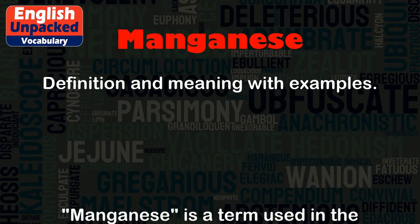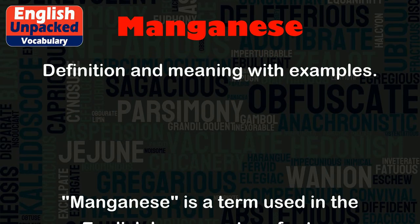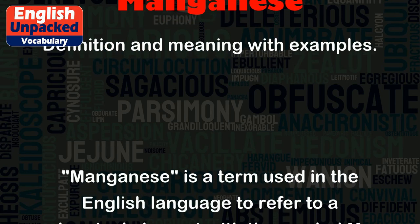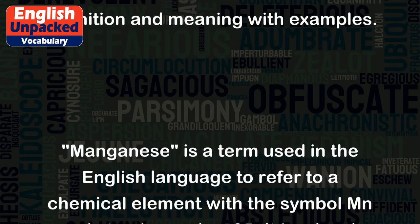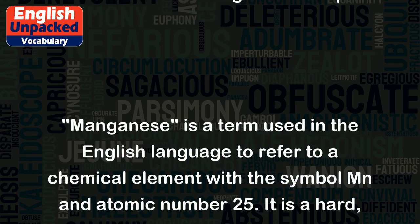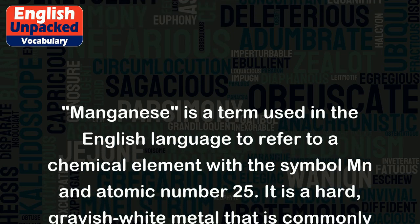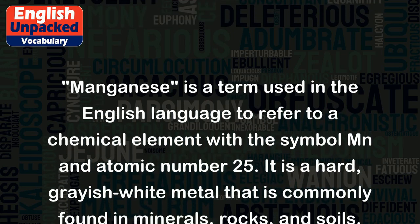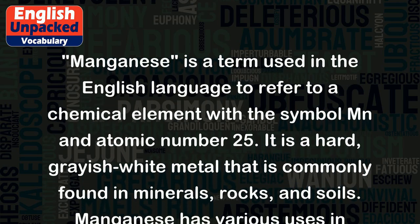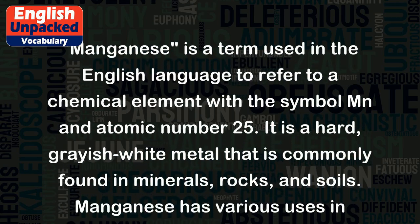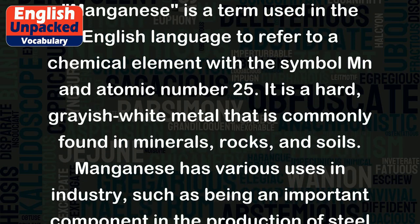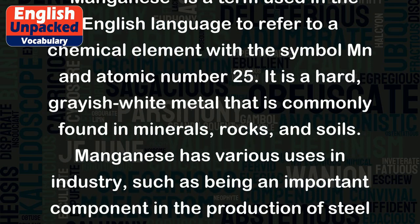Manganese is a term used in the English language to refer to a chemical element with the symbol MN and atomic number 25. It is a hard, grayish white metal that is commonly found in minerals, rocks, and soils.